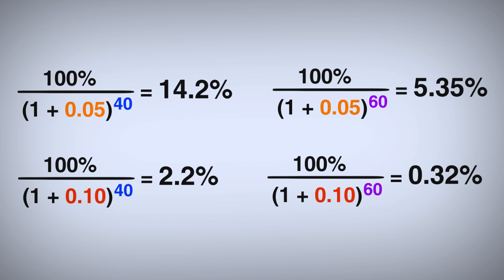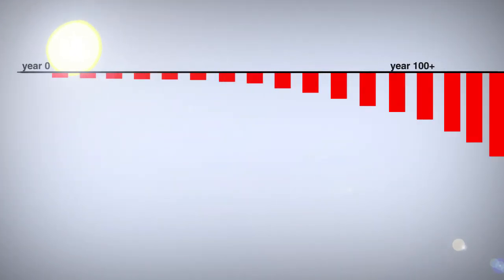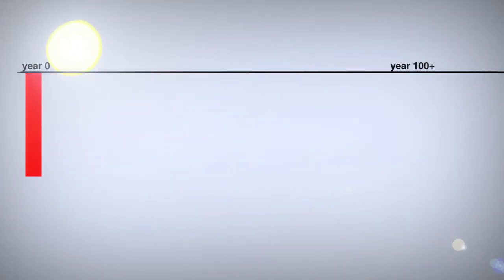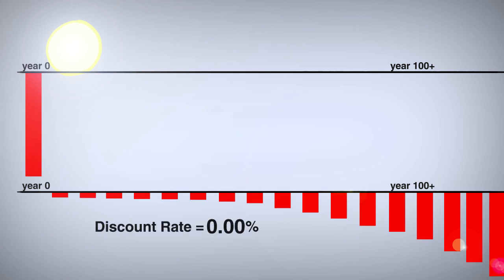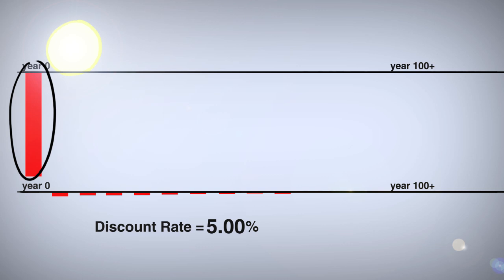For projects concerned with very long term effects, like global warming, this is going to cause problems. For global warming, large costs right now might prevent even larger costs or loss of benefits in the future. But if we discount the future so much it can seem like those future costs aren't really a big deal, but those costs today are.